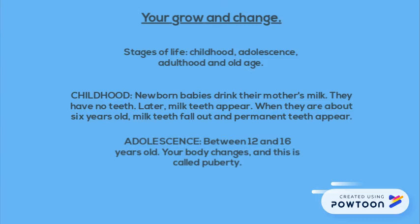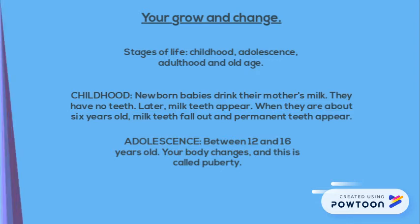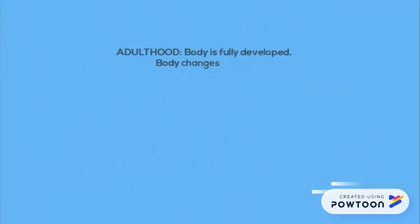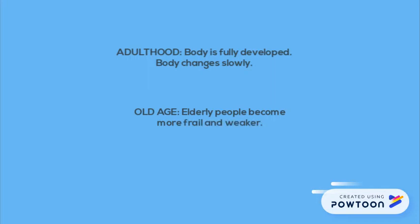Adolescence is between 12 and 16 years old. Your body changes, and this is called puberty. Adulthood: the body is fully developed and changes slowly. And old age: elderly people become more frail and weaker.